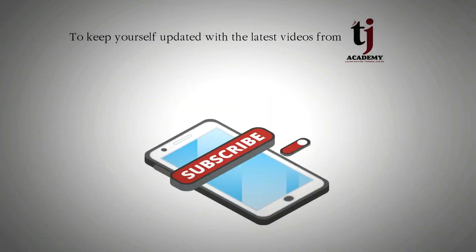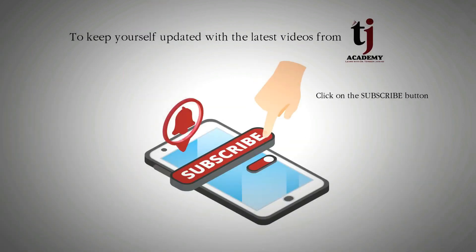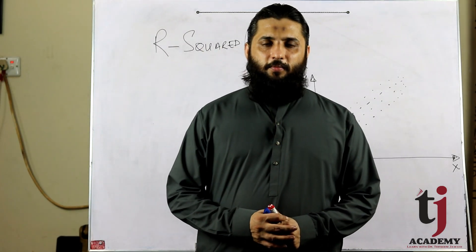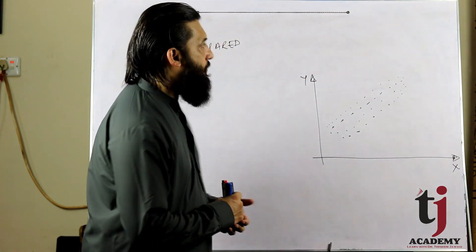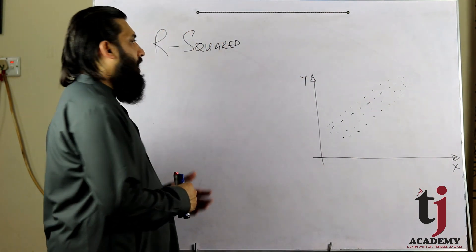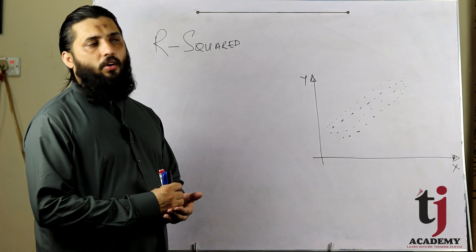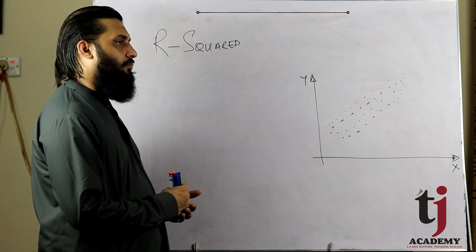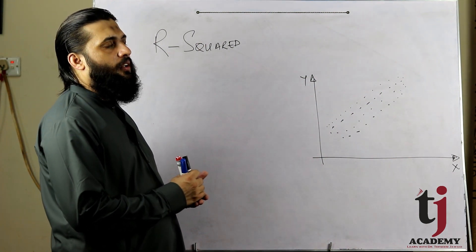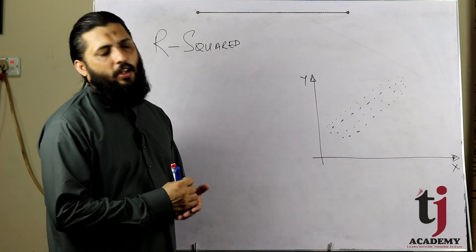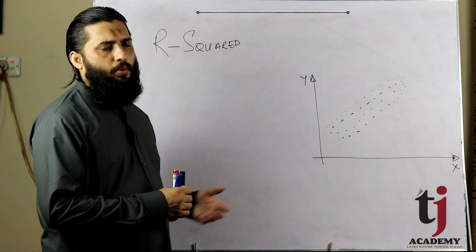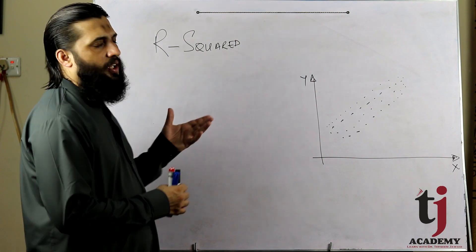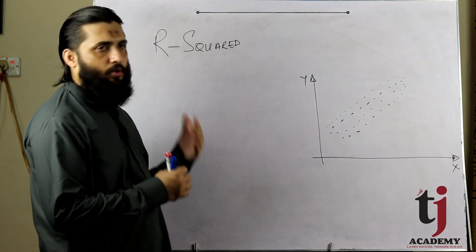To stay updated, subscribe to TJ Academy. Today the topic we are going to discuss is R-squared. R-squared is a regression-related concept and students don't have much clarity on it. It is known as the model fitness or explanatory power, but the key point is why we have a model fitness to discuss.